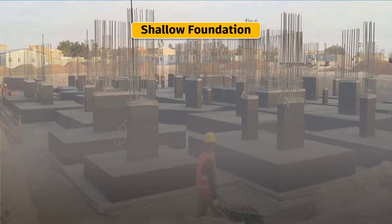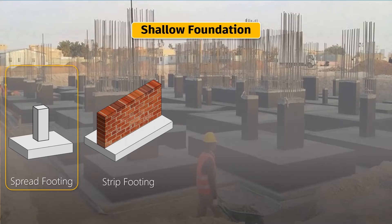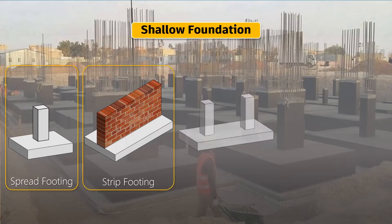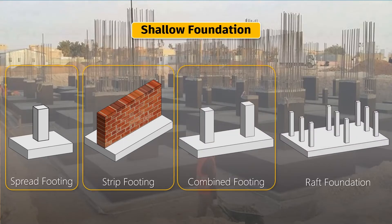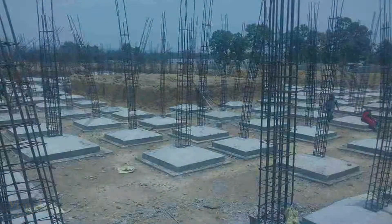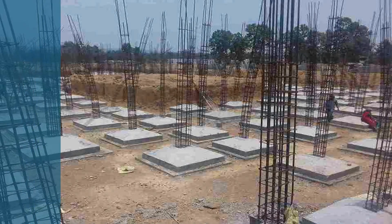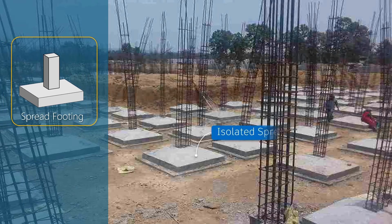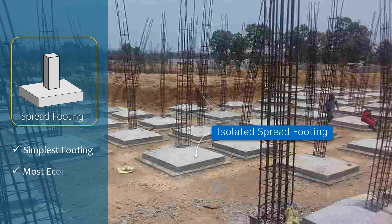The most common shallow foundations include isolated spread footing, strip or wall footing, combined footing, and raft or mat foundation. The first type is isolated spread footing — this is your go-to for individual columns or pillars, and it's the simplest and most economical choice.